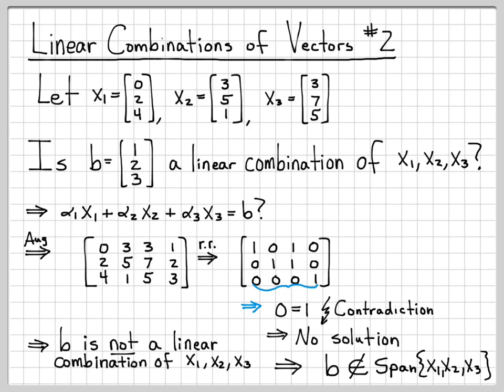So that's the end of that example. We figured out that b is not a linear combination of the vectors x1, x2, and x3 by forming an augmented matrix, doing simple row reduction operations to solve for alpha 1, alpha 2, alpha 3, and we found out that there was no solution.